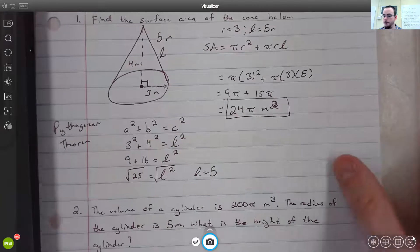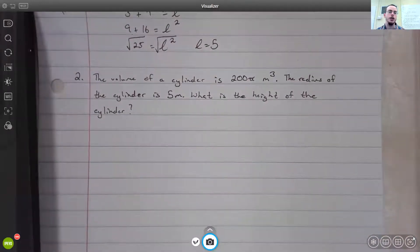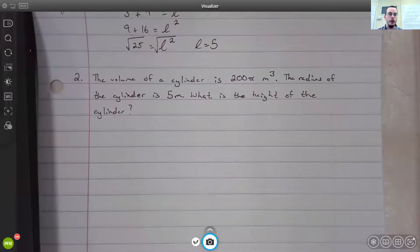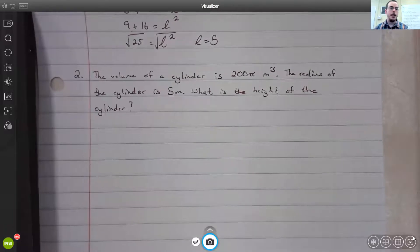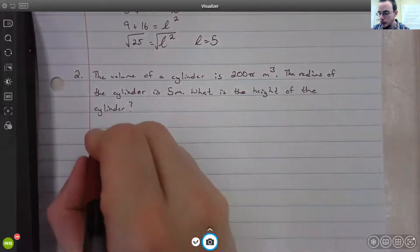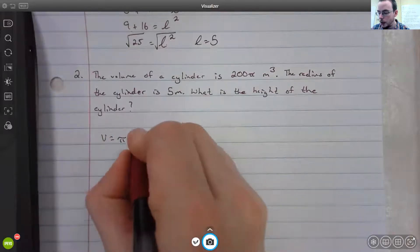Let's look at number two. Number two says the volume of a cylinder is 200π meters cubed. The radius of the cylinder is 5 meters. What is the height of the cylinder? So it gives us a volume and the radius and wants us to determine the height. We're still going to have to use a formula. On your formula sheet, the volume of a cylinder is given by π r² times h.